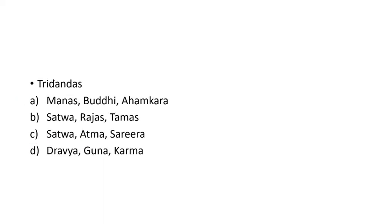The answer for this question I have told before. So just making you remember once more: three Dhandas, three pillars, three pillars of life. There are three things only, and all the options are having three items only. So which one is the correct one? We have to check.